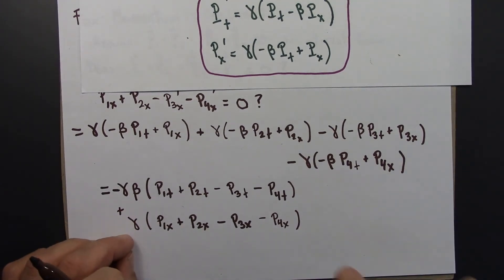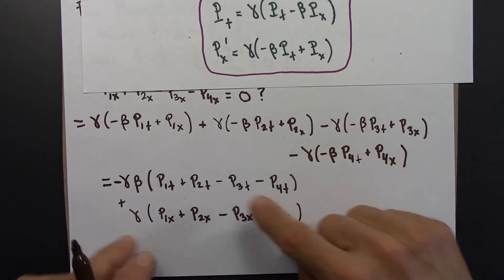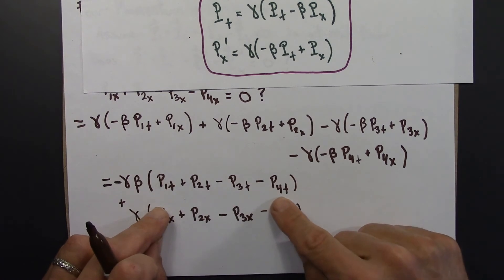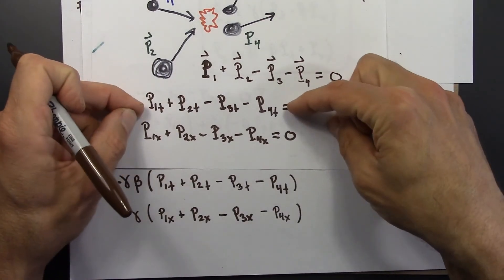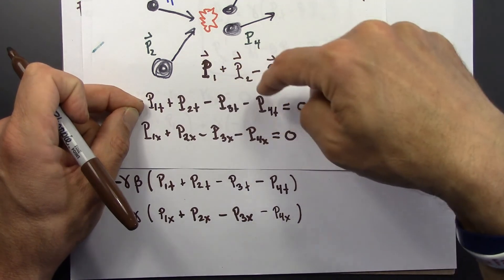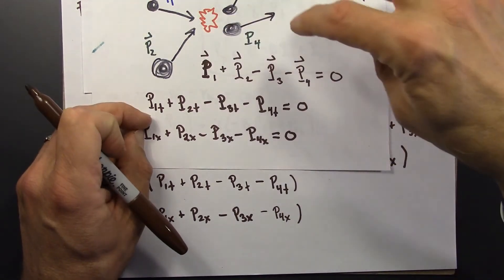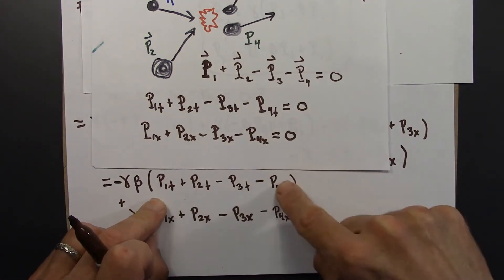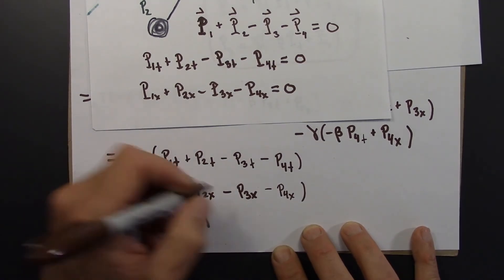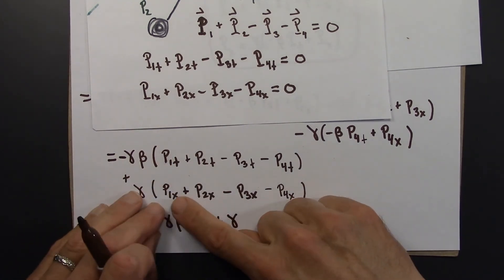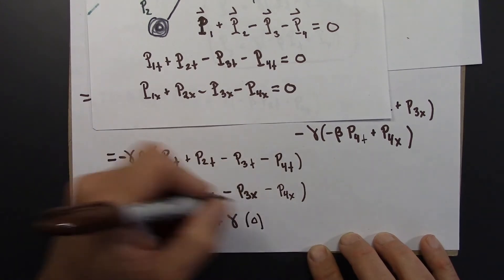This is exciting — and it's basically the end of the derivation. Check out what we have here. These are the t-components of momentum in the unprimed frame in exactly the form p1t + p2t − p3t − p4t, and that equals zero because we assumed momentum is conserved in this frame. So the first group is (−gamma·beta) times zero. And the x-components p1x + p2x − p3x − p4x are also exactly this conservation condition, which is also zero. So the whole thing is zero.